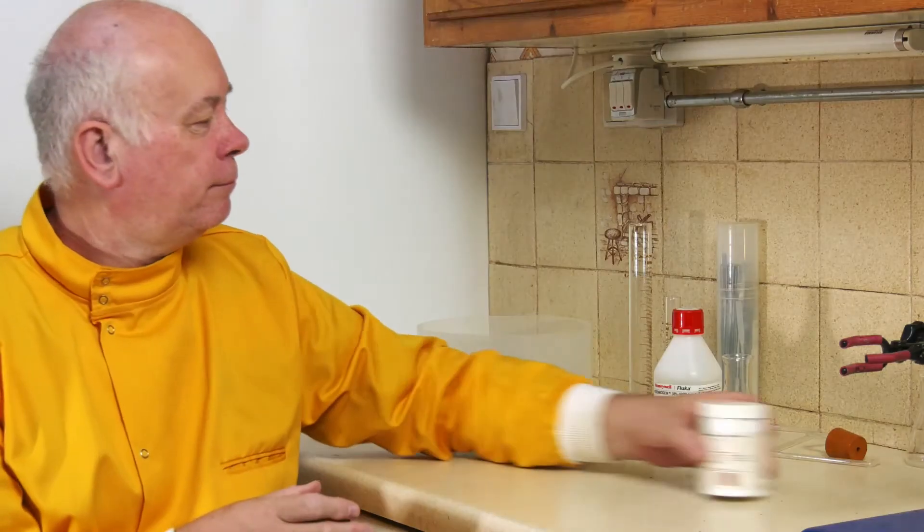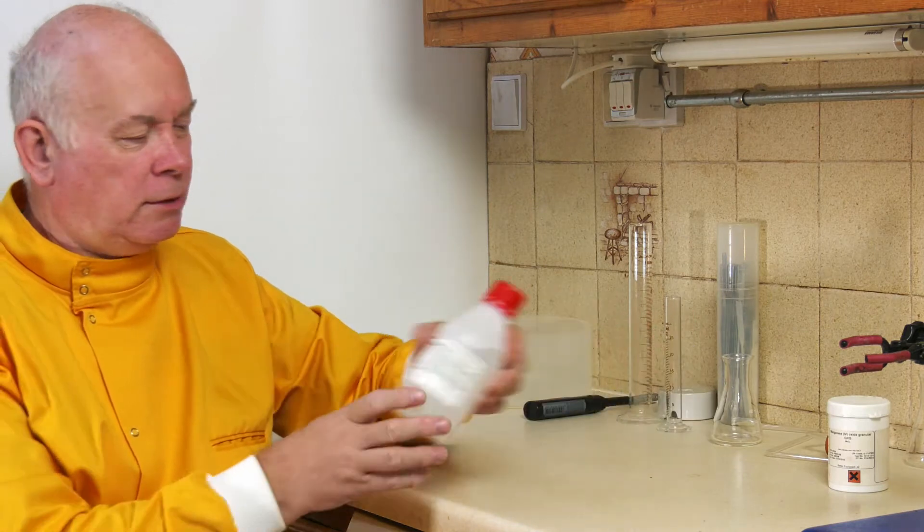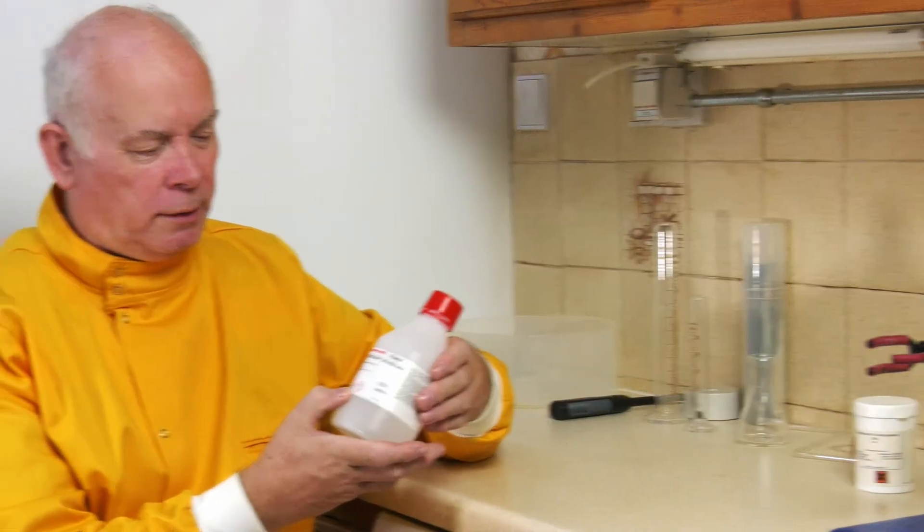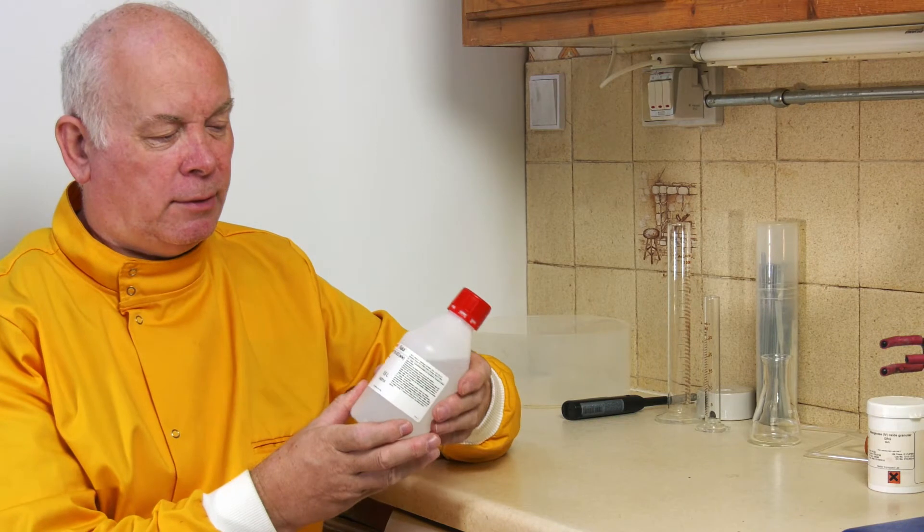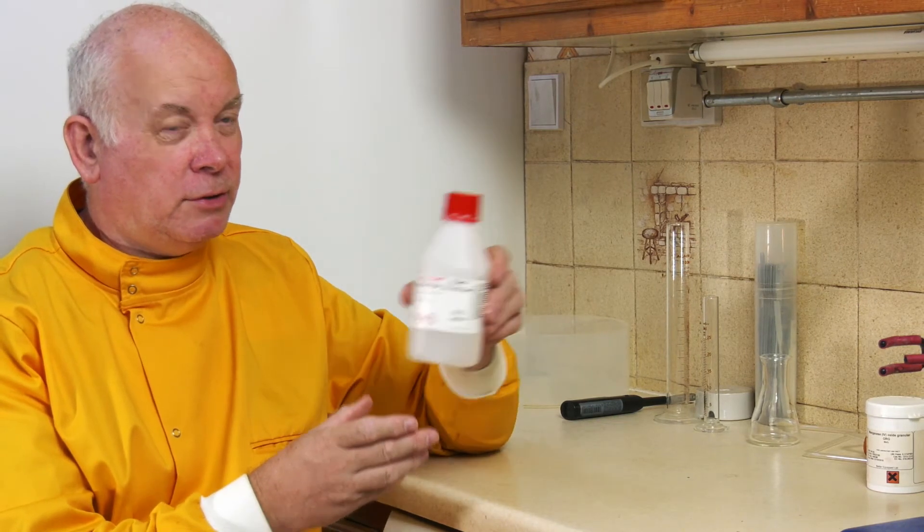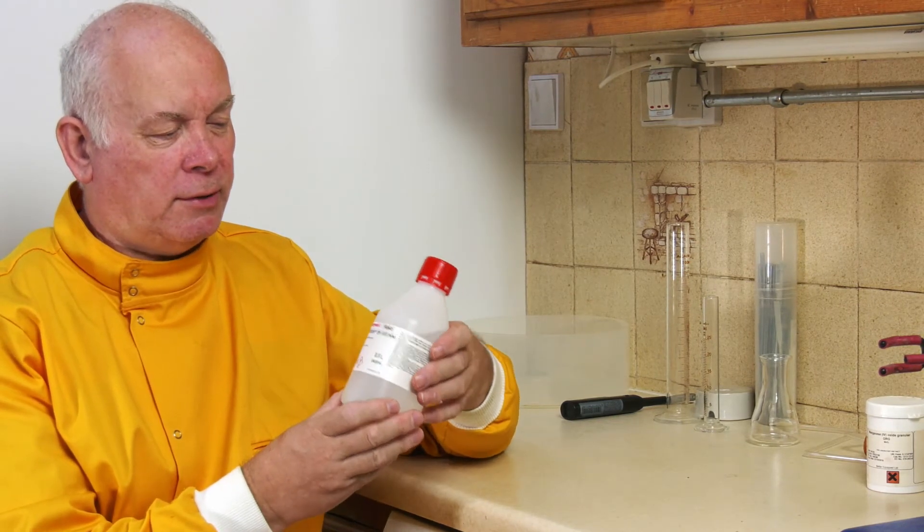It's a catalyst, we can reuse it. So at the end of this experiment what we can do is we can reclaim this and we can use it again and again. The hydrogen peroxide comes with some warnings of it being fairly corrosive - this is reasonably strong hydrogen peroxide, 30 percent.